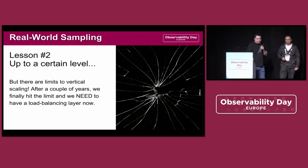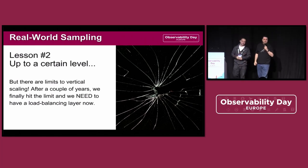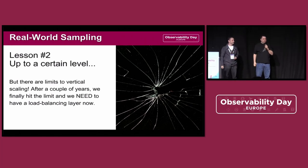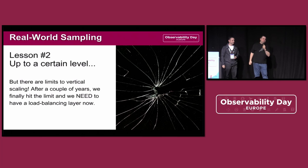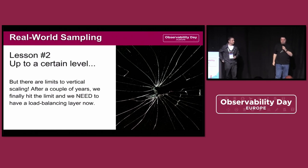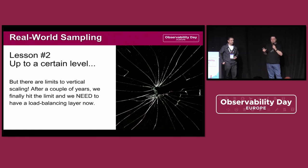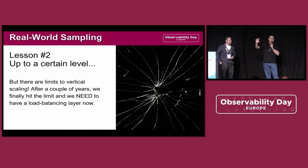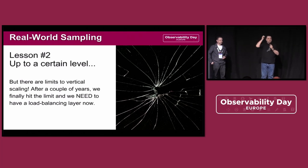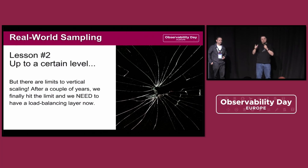A collector can only hold so much load though. They had 250,000 spans per second — quite something — but there is a limit. After doing vertical scaling of their collectors, they found that they hit the limit. Looking at the previous chart, you probably saw a spike and then a constant load during the day, which is not optimal usage of resources. They hit a limit where it's harder to scale vertically.